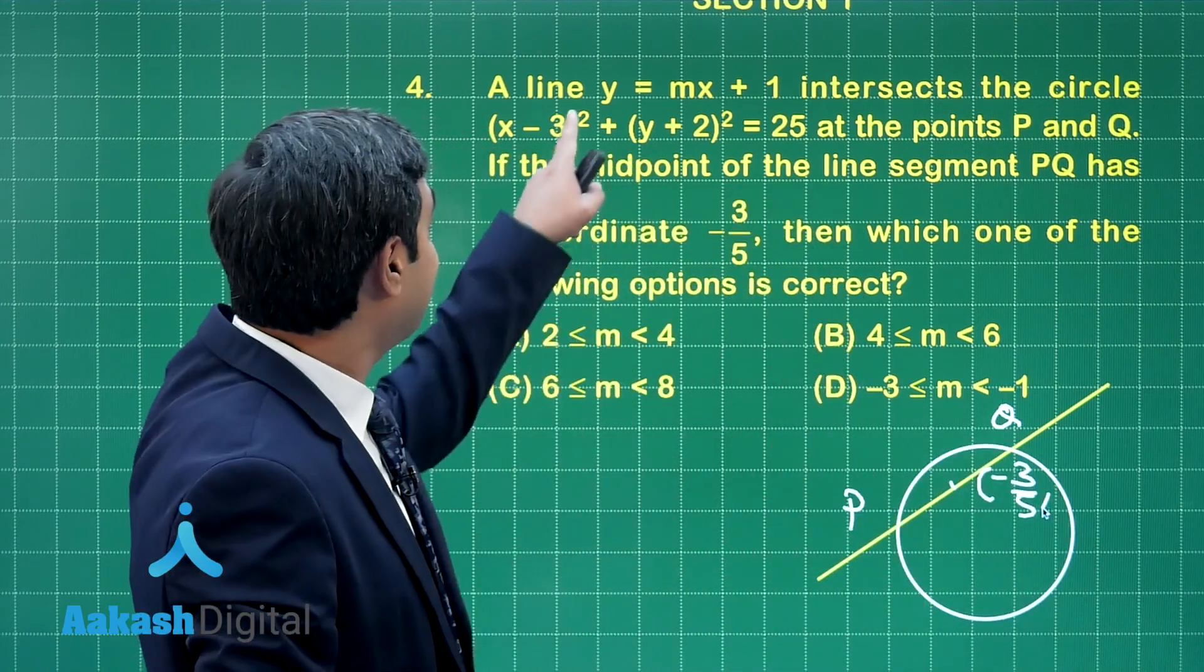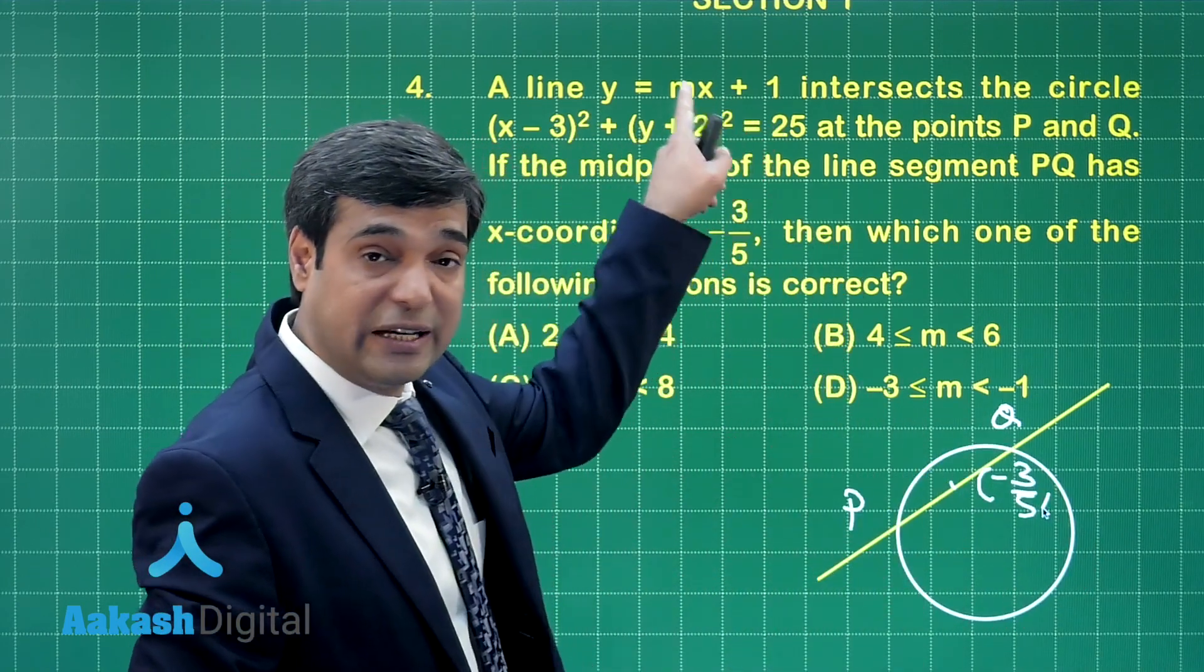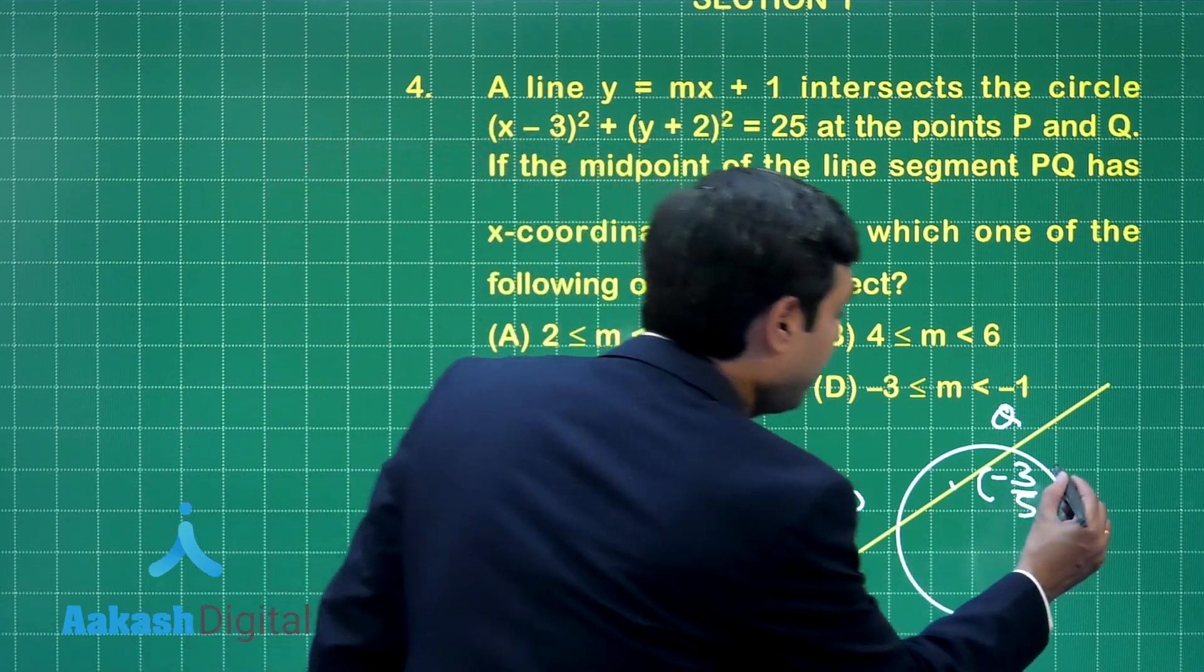Now y equals mx plus 1 is the equation of it. Now it is mentioned that midpoint's abscissa is minus 3 by 5. So, can we write here the midpoint as minus 3 by 5 comma k. What is k? k is lying here on this line. So, it can be written as minus 3 by 5 m plus 1.